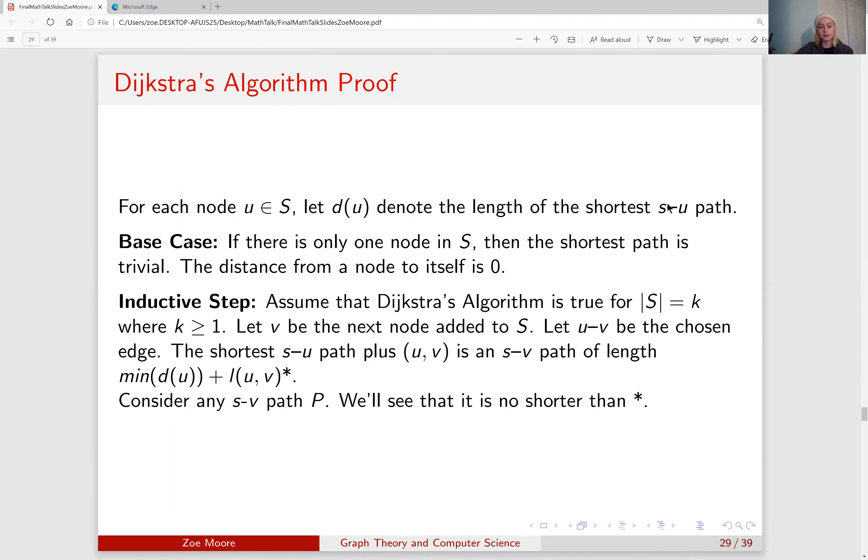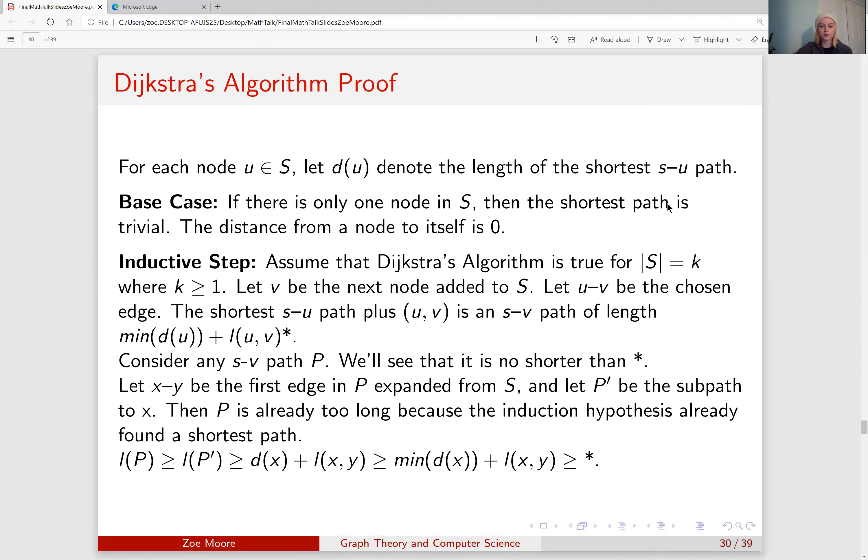We then will consider any S to V path, which we will call P, and we will see that it is no shorter than this minimum equation that we labeled star. We want to let X to Y be the first edge in P that is expanded from S, and we will let P prime be the sub path to X. At this point, we know that P is already too long because our induction hypothesis found a shortest path, and this equation described below demonstrates that the length to P or distance to P is either greater than or equal to the path that we found in our equation star, and thus our induction proof is done.